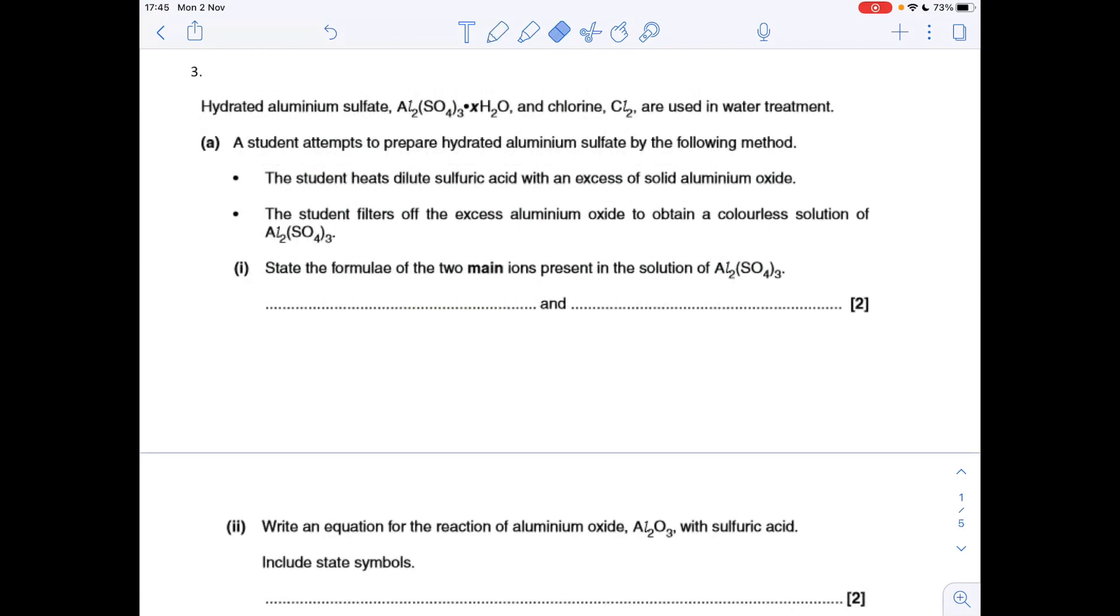Question three now: the formulae of the two main ions present in the solution of aluminum sulfate. Obviously going to be the aluminum ions, that's Al3+, and the sulfate ion, SO4 2-.